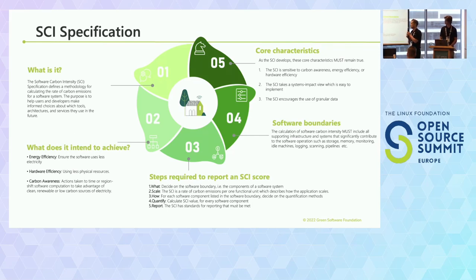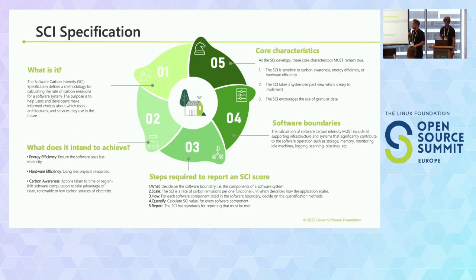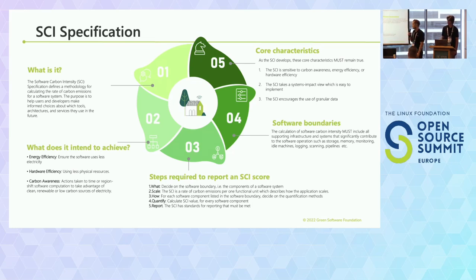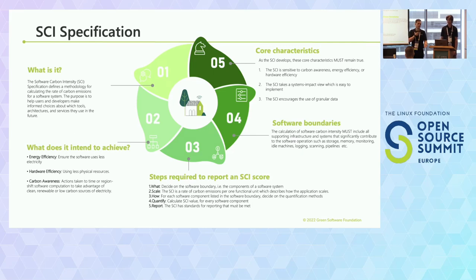To create an SCI score, there are five steps. First, decide what you're actually measuring — we call this the software boundary. Second is what we call the scale — what you're measuring against, such as software carbon intensity per API call, per user, or per transaction. That needs to be stable for the software you're measuring and make sense for the use case. Then you think about how you're actually measuring it — what quantification methods you're using.